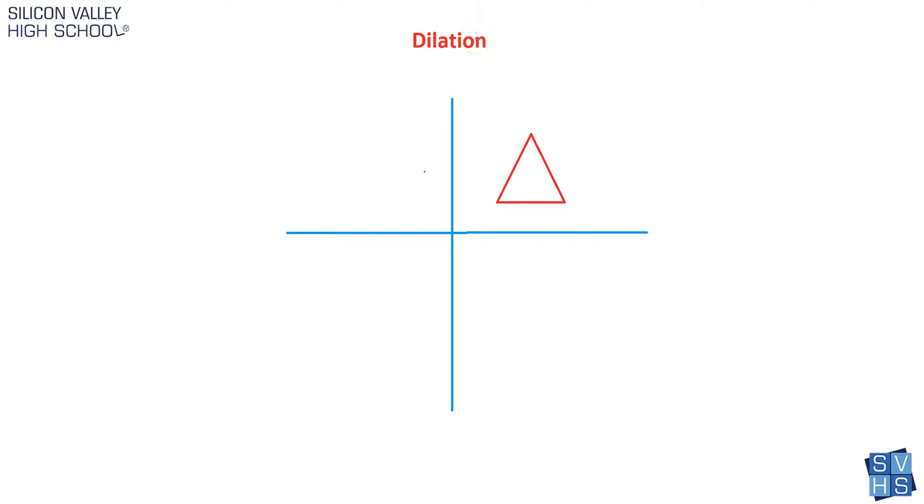And what a dilation is, it really just sounds like the word that's kind of used every day. To dilate something is to change its size, but not its shape. So the key to dilation is that this triangle, let's say we're going to dilate this triangle. One thing is that these angles would remain the same. So it's exactly proportional. It would just get larger or smaller. Dilations can also get smaller.